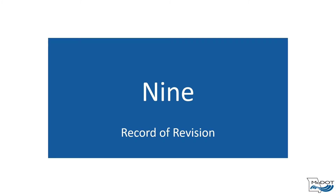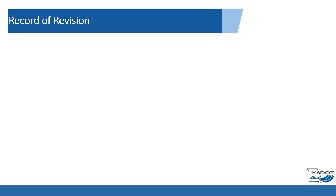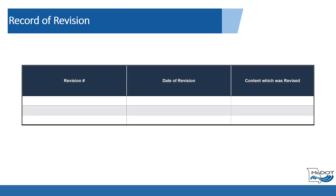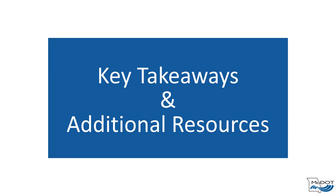The last section of the Methods and Assumptions Report Template, Section 9, is Record of Revision. As mentioned at the beginning of this module, the intent is for the Methods and Assumptions report to be updated as methodologies and assumptions change during the project. Therefore, this section should document the revision number, date of revision, and the content that has been revised.